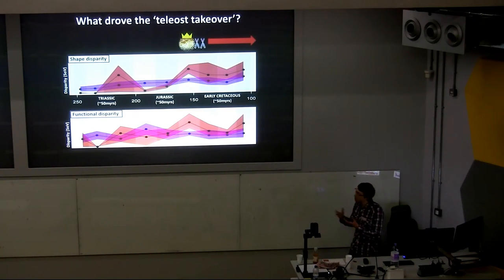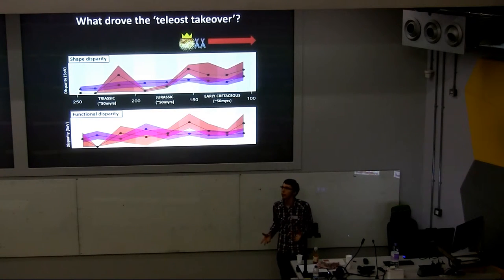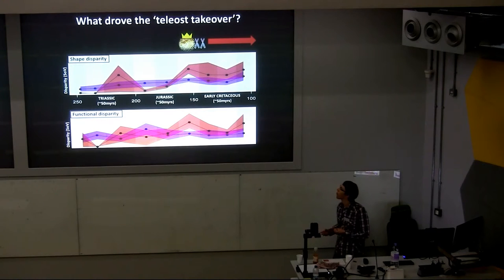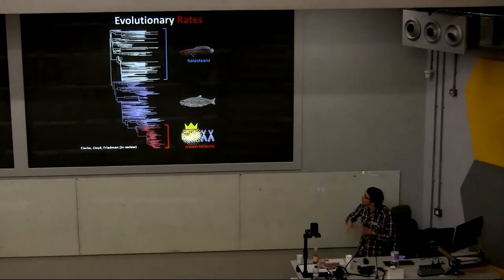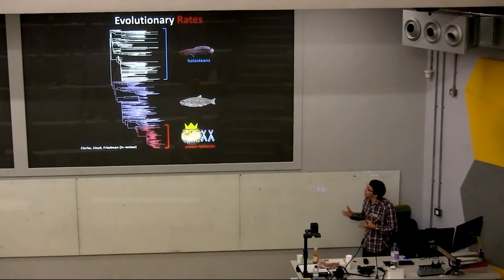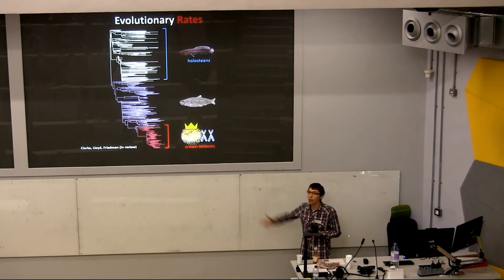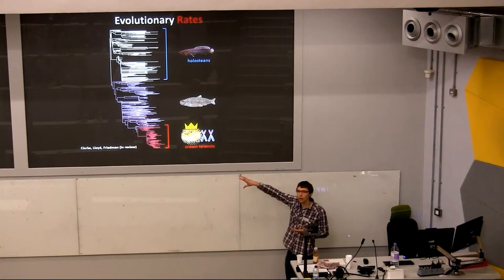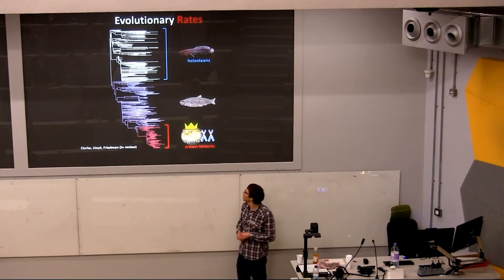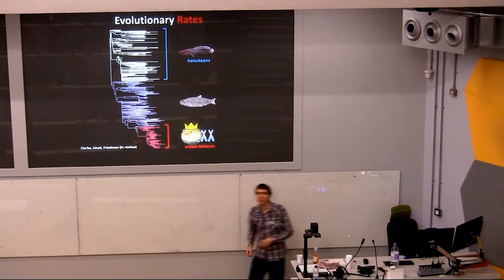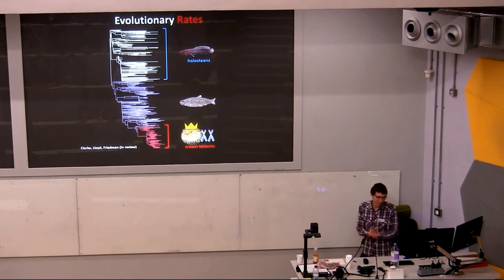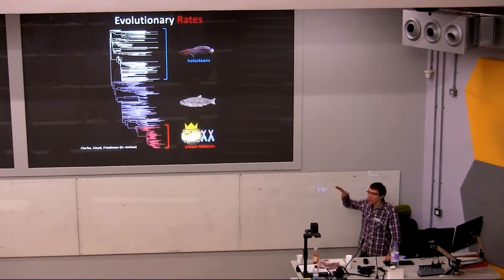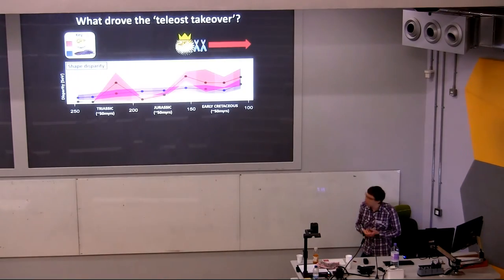Is it to do with the appearance of crown group teleosts? These are the ones with duplicate genomes that biologists tend to rave about. They appear in the late Jurassic and then continue to diversify. It's not just stuff from the literature that suggests crown teleosts might be important. In my own work looking at evolutionary rates — where blue represents low rates and red represents high rates — you tend to see higher rates of shape change in the crown teleosts. So there's reason to believe that these crown teleosts actually could be driving this pattern.